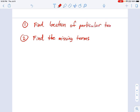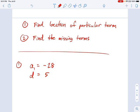And the other is find the location of a particular term. These are the ideas we'll be going over here. Let's say I've got an arithmetic sequence, and I want to know where a certain term is located. Number one, we're going to say I have an arithmetic sequence, and all I know about it is that the first term in the sequence is negative 28. And I also know that the common difference is 5.